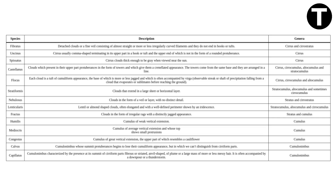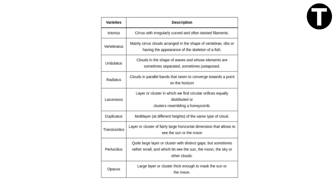And now, the 9 cloud varieties. These describe how clouds arrange themselves and their transparency levels. These nuances paint a more vivid picture of our ever-changing atmosphere.